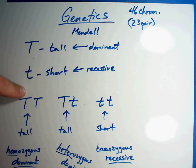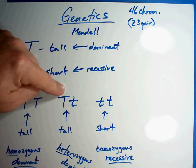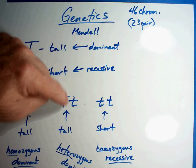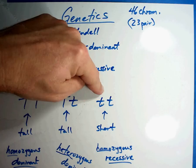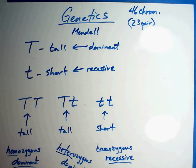Heterozygous dominant. You see the recessive gene is in there, but you can't see it. And this one's homozygous recessive.